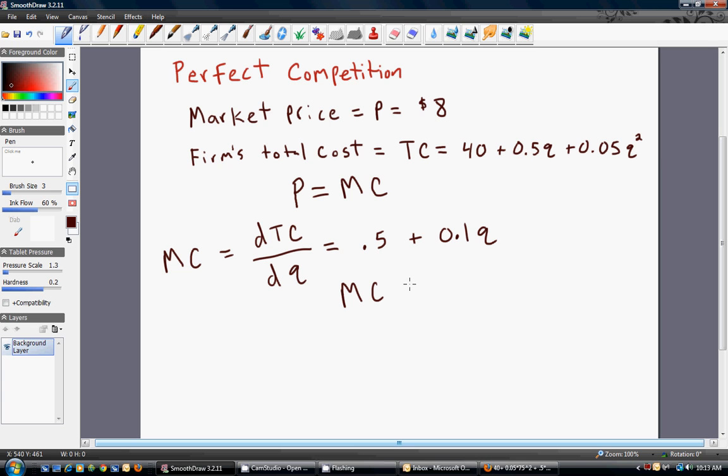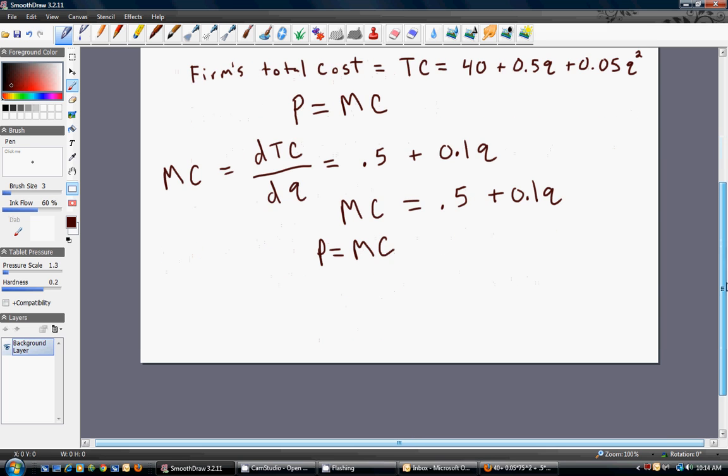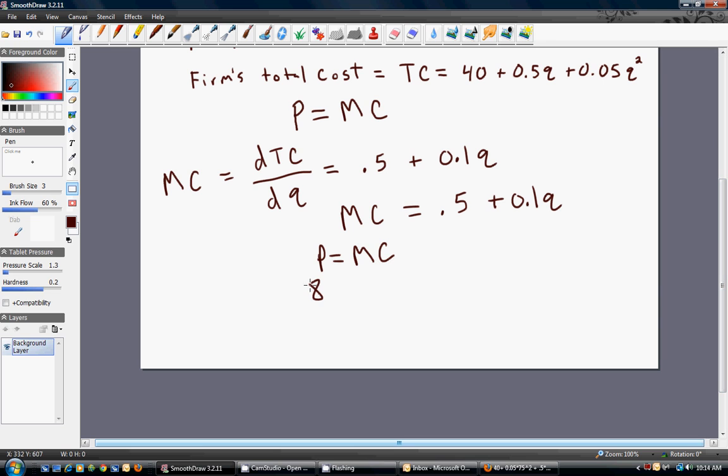So marginal cost is 0.5 plus 0.1q. And all we need to do is plug our information into this profit maximizing condition. Price equals marginal cost. Setting $8 equal to 0.5 plus 0.1q. Solving this, we get 0.1q equals 7.5, so q equals 75.